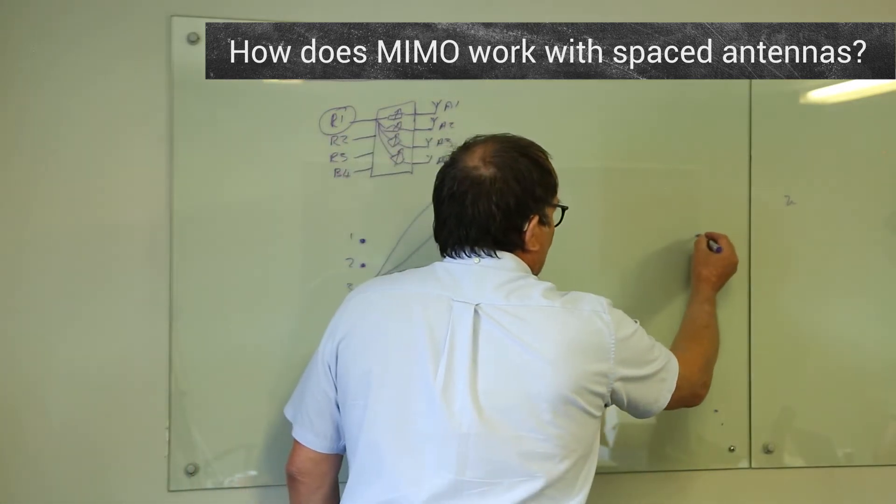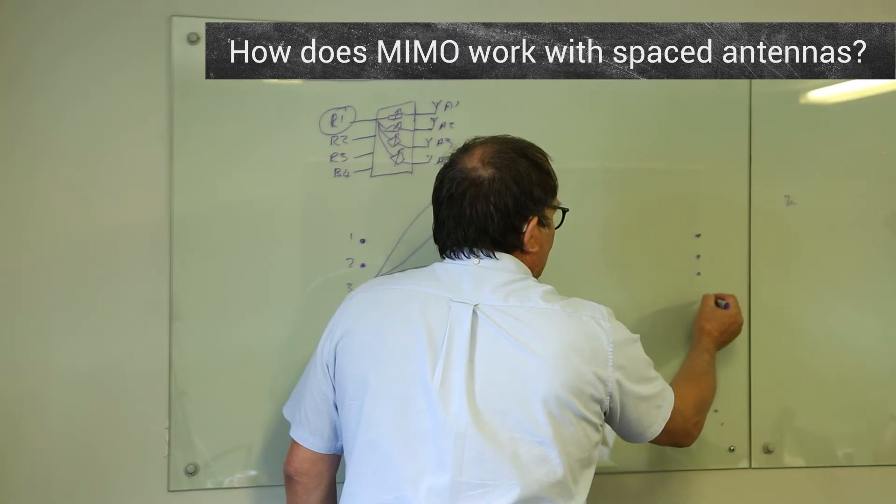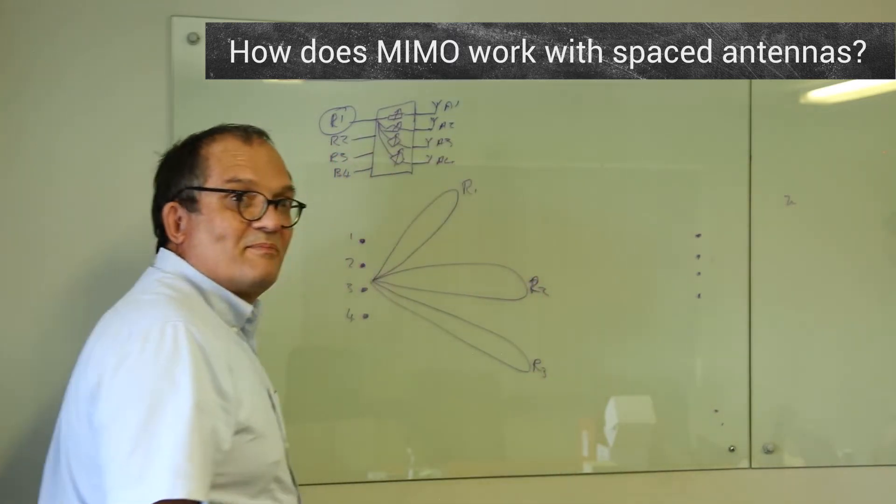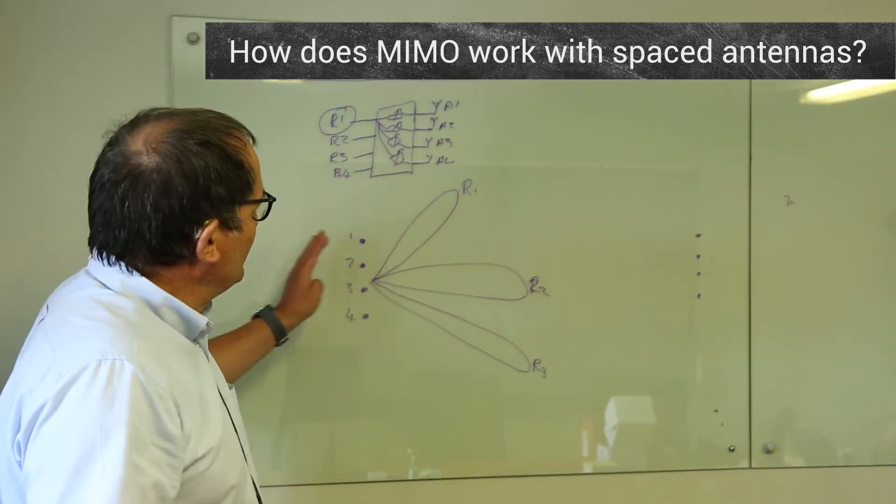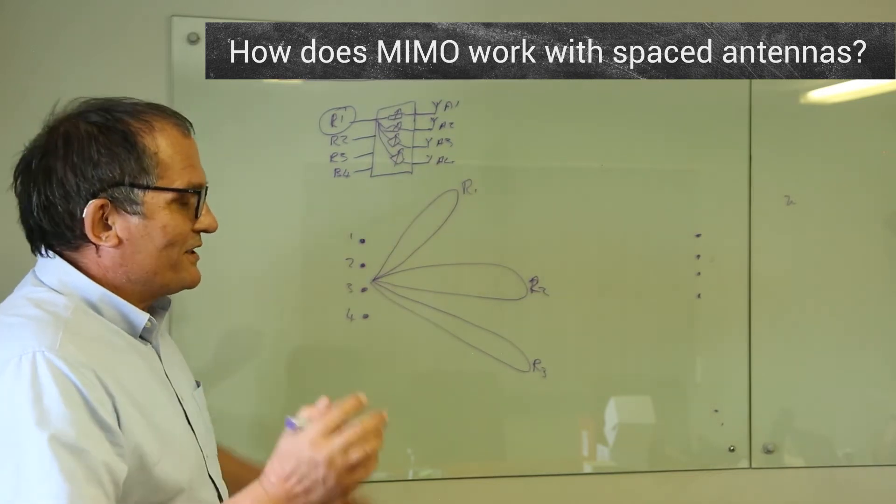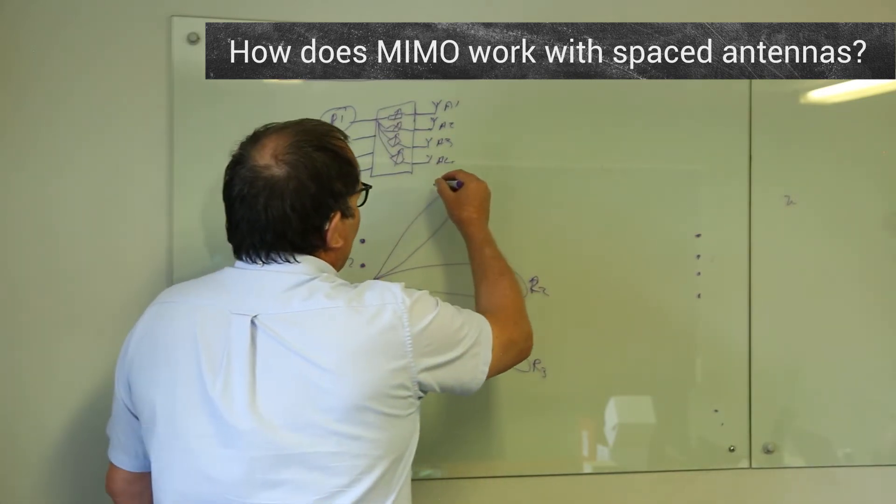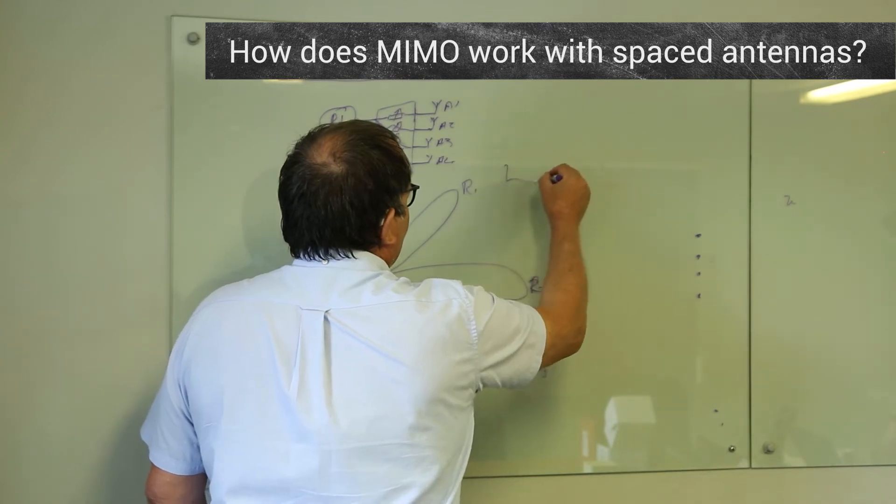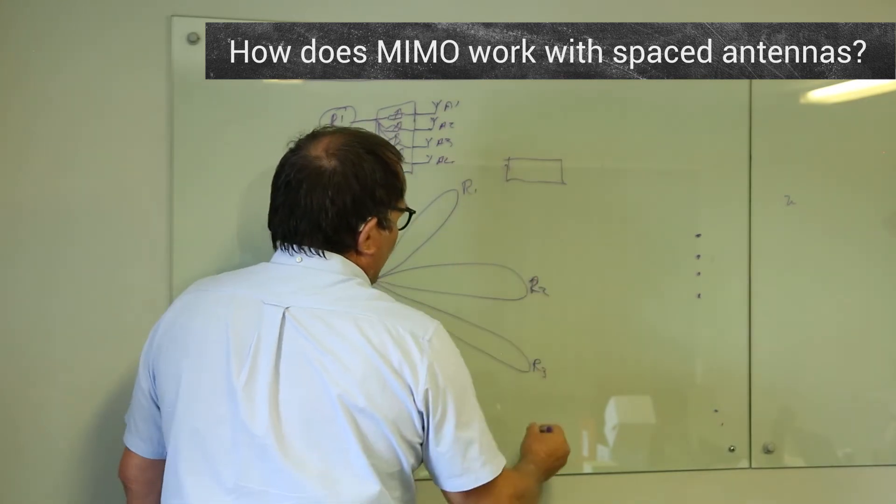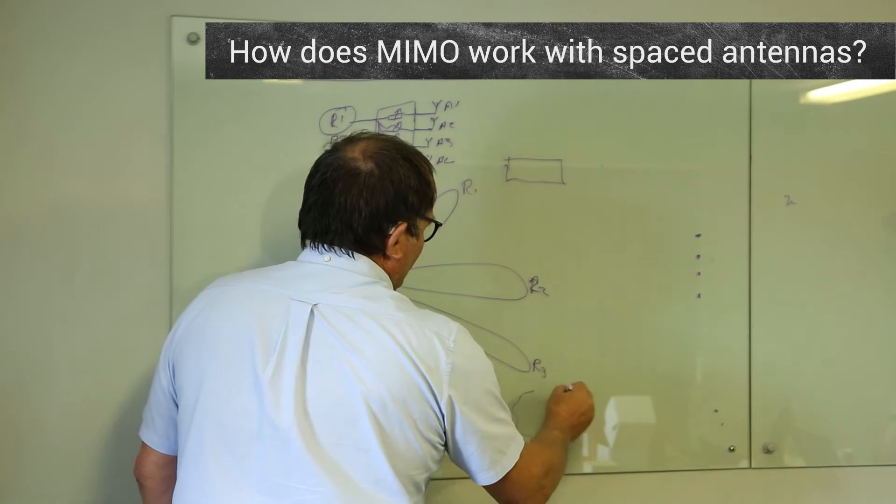Now on the other side, we've got a similar situation. Base station will also have, hopefully, spaced antennas. It's got its own MIMO box. And they negotiate. And say we're lucky.